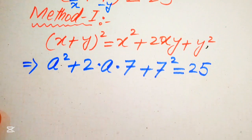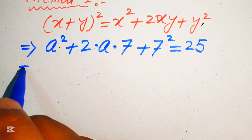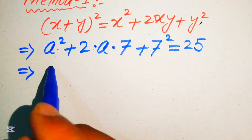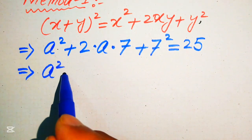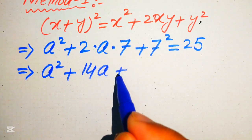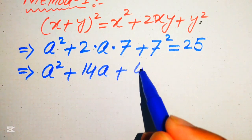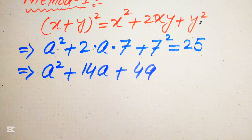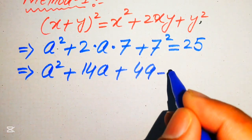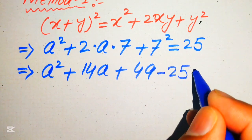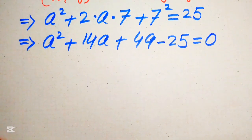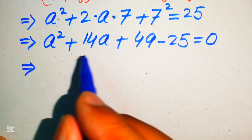In the next step, we simplify. Combining like terms: a² + 14a + 49 = 25. We move 25 to the left-hand side, giving minus 25, so the equation equals 0.